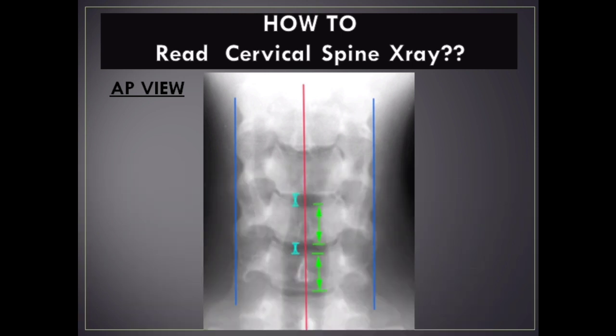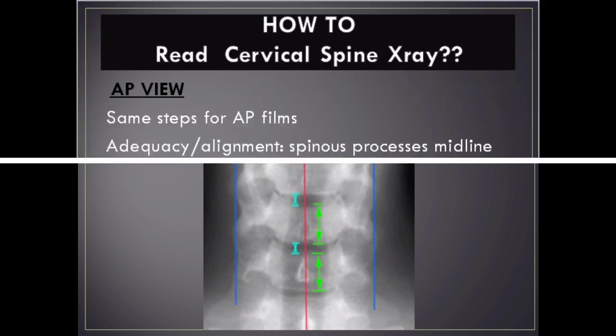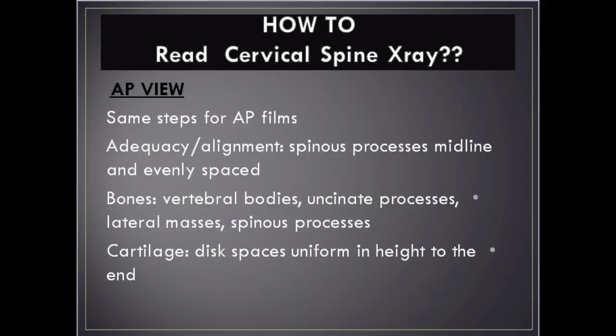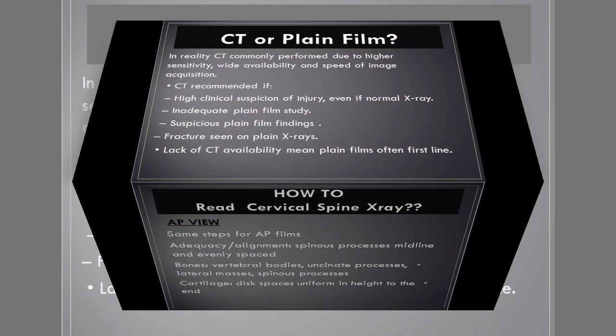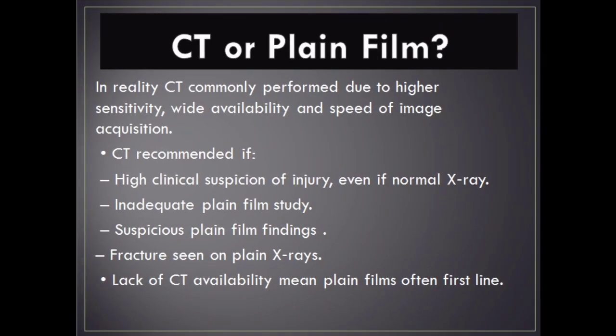Anteroposterior View: Apply the same steps to AP films. Check adequacy and alignment — spinous processes should be midline and evenly spaced. Assess vertebral bodies, uncovertebral (uninate) processes, lateral masses, and spinous processes. Disc spaces should be uniform in height.